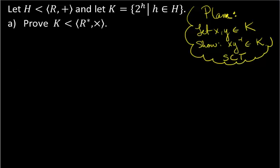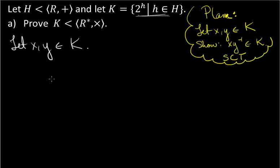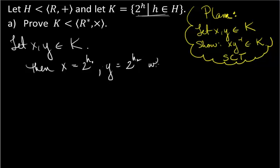You have to be really careful to understand what these groups are. Let X and Y be in K. Now I have to interpret that — what does it mean to be in K? Well, it means that X and Y are powers of 2, and that the exponents come from H. So let's write: X equals 2 to the H1, and Y equals 2 to the H2, where H1 and H2 come from H.